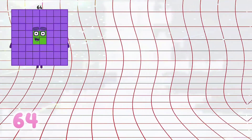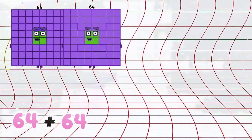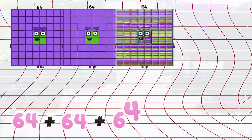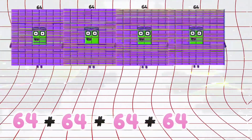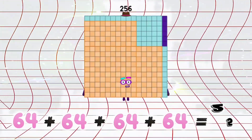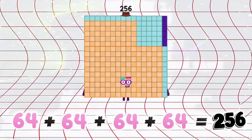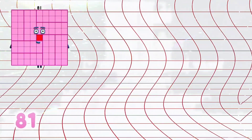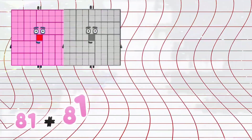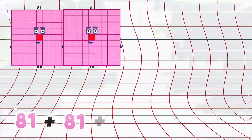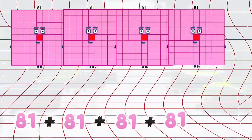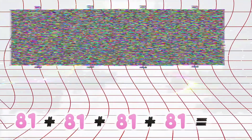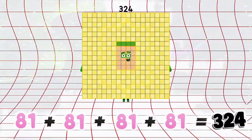64 plus 64 plus 64 plus 64 is equals to 256. 81 plus 81 plus 81 plus 81 is equals to 324.